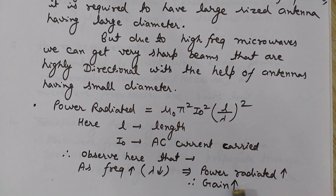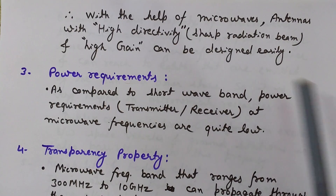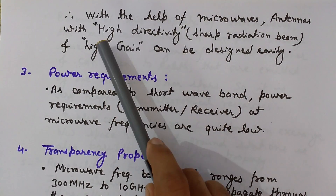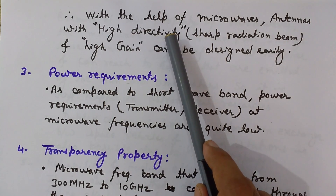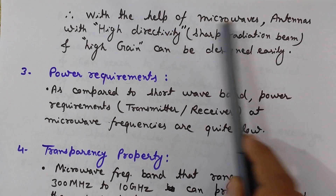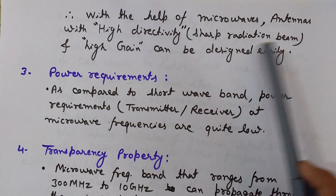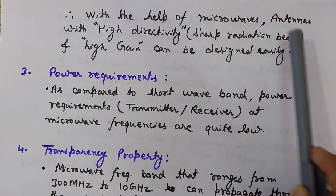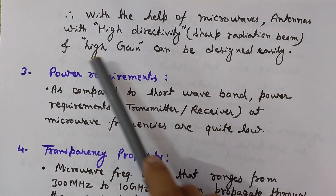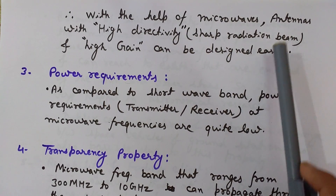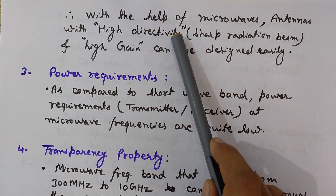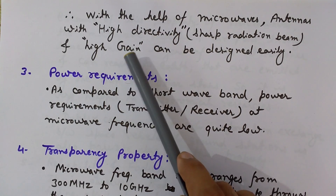Because of this high power radiation, the gain is also more. With the help of microwaves, antennas with high directivity — that is, a sharp radiation beam or low beam width — and high gain can be designed easily at microwave frequencies.